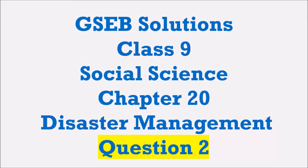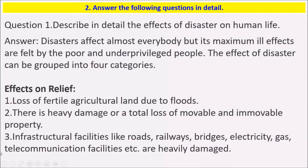Question 2: Answer the following questions in detail. The first one is: describe in detail the effects of disaster on human life. Disasters affect almost everybody, but their maximum ill effects are felt by the poor and underprivileged people. The effects of disaster can be grouped into four categories. Effects on relief: loss of fertile agricultural land due to flood; there is heavy damage or total loss of moveable and immovable properties.